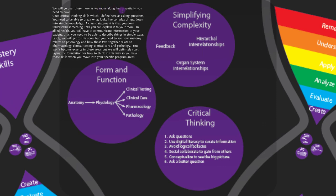We'll go over mastery skills more as we move along. You need good critical thinking skills, which I define as asking questions, plus digital literacy to figure out where to go to answer those questions — is Wikipedia a good source, is WebMD, are infomercials? You also want to avoid logical fallacies, where our brain takes shortcuts and leads us to wrong conclusions. Social collaboration helps — more brains are better than one. Ultimately, critical thinking is all about asking questions in order to ask better questions.